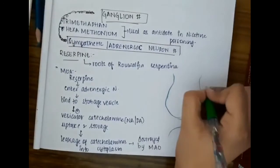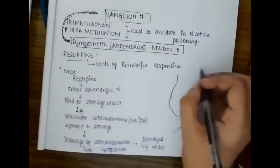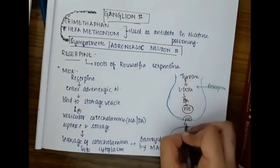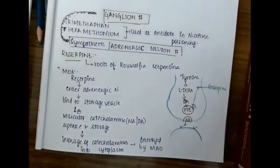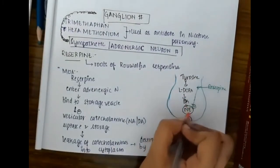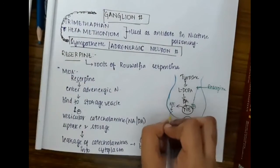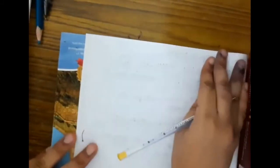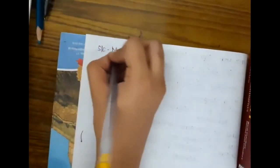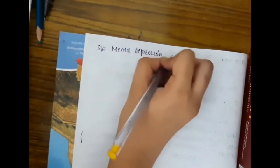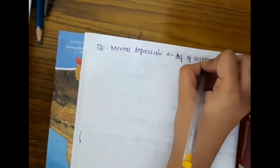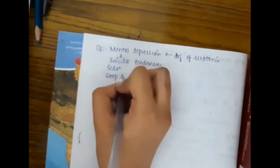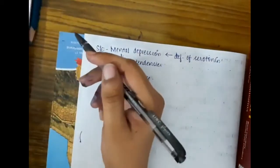In the presynaptic neuron, tyrosine forms L-dopa, which forms dopamine, then forms noradrenaline, which is normally released outside. Reserpine binds and inhibits the vesicular uptake and storage of noradrenaline, so noradrenaline cannot be released. Side effects of reserpine include mental depression due to deficiency of serotonin, which can result in suicidal tendencies, sedation, and sleep disturbance.